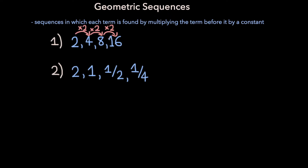But the terms in a geometric sequence don't necessarily have to increase as the sequence progresses, as we can see in the second geometric sequence, in which each term is the previous term multiplied by 1 half. 2 times 1 half is 1. 1 times 1 half is 1 half. And 1 half times 1 half is 1 fourth.